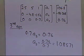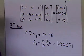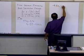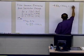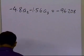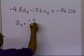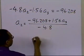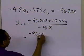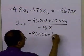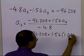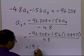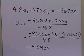Now we want to calculate a2. We'll have to write down the second last equation, which turns out to be minus 4.8 a2 minus 1.56 a3 equals minus 96.208. Writing this in terms of a2, I get minus 96.208 plus 1.56 a3, all divided by minus 4.8. Substituting the value of a3 which we just obtained — a3 equals 1.08571 — this value turns out to be 19.6905. So we have now calculated a3 and a2.